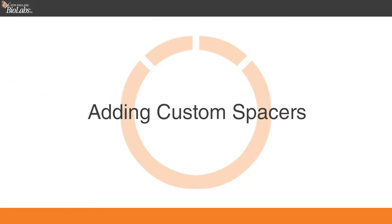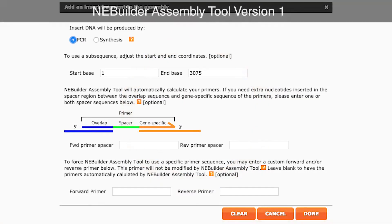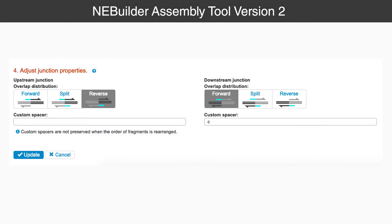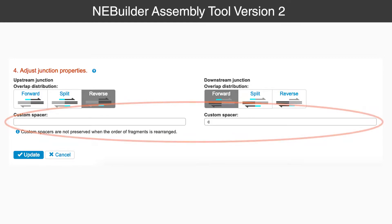Adding custom spacers. AnyBuilder version 2 changes the point at which custom spacers between fragments can be added. In version 1, spacers could be entered during the initial fragment entry or by editing an insert fragment by double-clicking on it. In version 2, spacers can only be added after fragments are entered by editing them, clicking on the pencil icon, and scrolling down to the junction properties section.